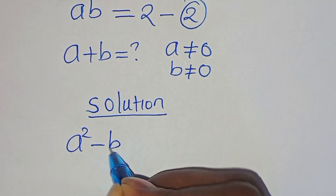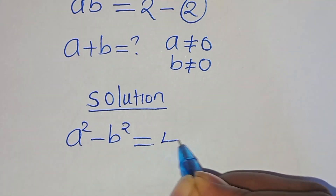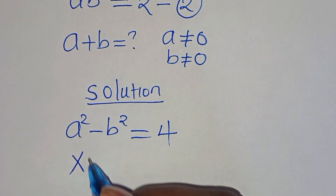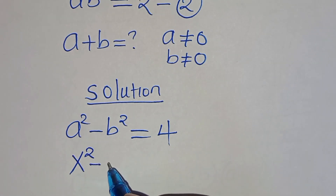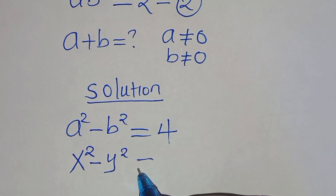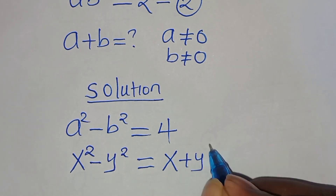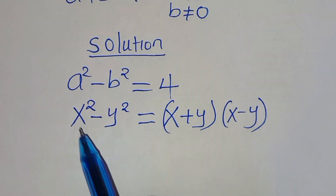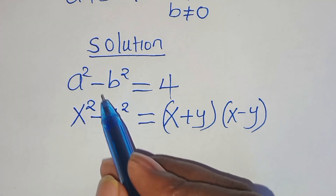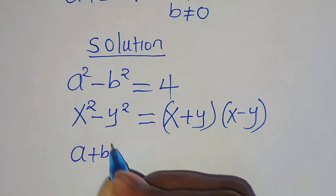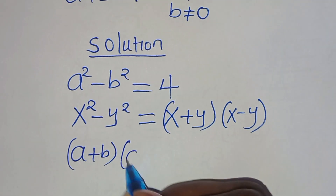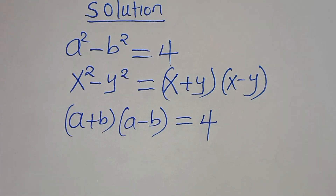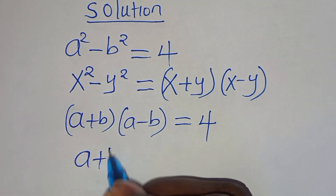From equation 1, a squared minus b squared equals 4. This is in the form of the difference of two squares: x squared minus y squared, which can be expressed as x plus y times x minus y. Applying this identity, a squared minus b squared becomes a plus b times a minus b, which equals 4.